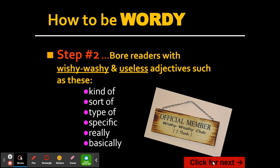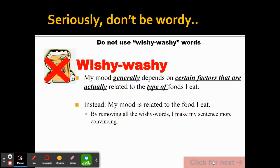You don't want to bore readers with wishy-washy or useless adjectives — 'kind of,' 'sort of,' 'specific,' 'really,' 'basically.' Those are just space holders that don't say anything and they're not helping you prove your thesis statement. For example, 'my mood generally depends on certain factors that are actually related to the type of foods I eat' should instead be 'my mood is related to the food I eat.' By removing all the wishy-washy words, you make your sentence more convincing.